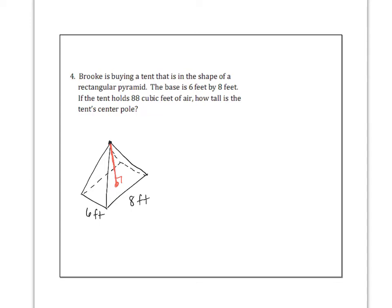Now, I see some things here. I see pyramid. I see cubic feet. That leads me to think that we're going to be dealing with volume of a pyramid. Volume of a pyramid is area of the base times the height of the object divide by 3. I always like to write down my formula.